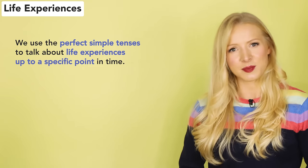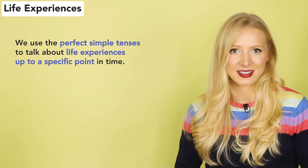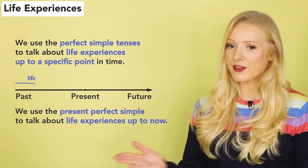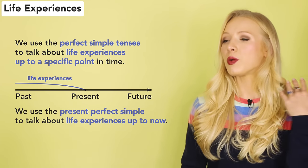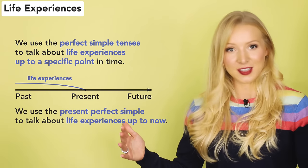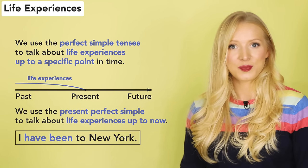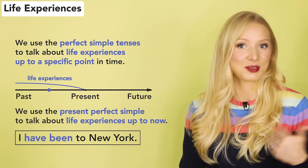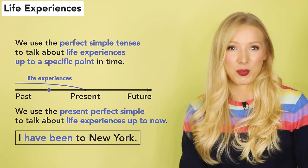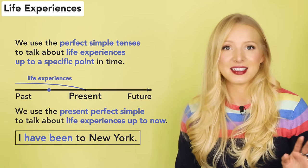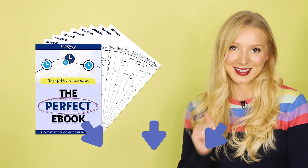We use the perfect simple tenses to talk about life experiences up to a specific point in time. We don't say exactly when these life experiences happened when we use a perfect tense. We use the present perfect simple to talk about life experiences up to now — the experiences happened in the past, but we are looking at them from the present. For example: I have been to New York. That means at some point in my life up to now, I went to New York. You don't know when exactly, but you know it was before the present time and that this event is completed — I am no longer in New York. You can learn about using the perfect tenses to say how many times something happened and negative sentences in the perfect ebook.